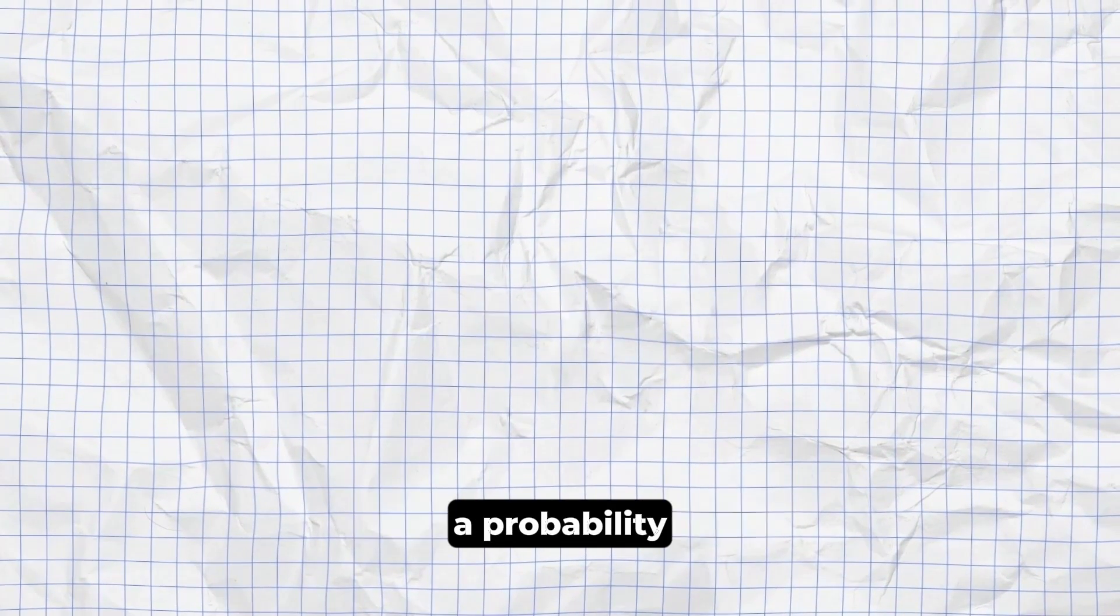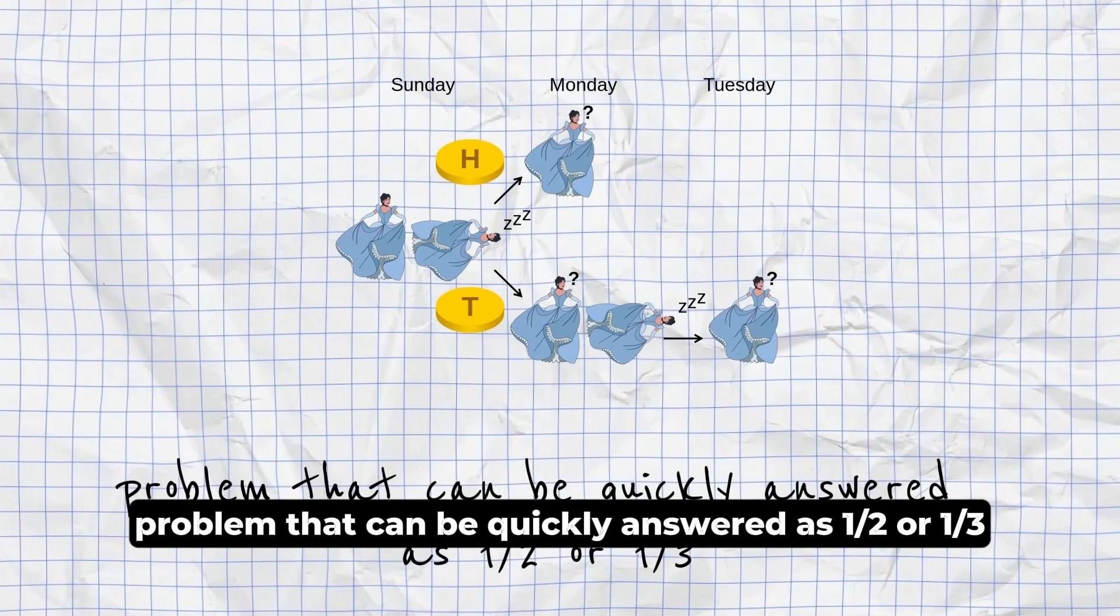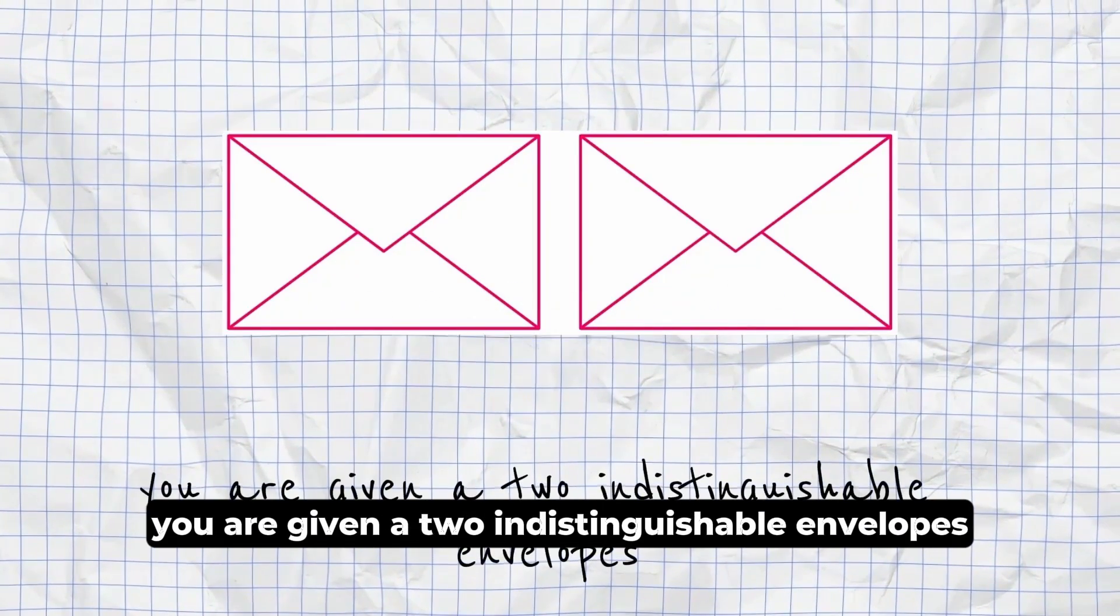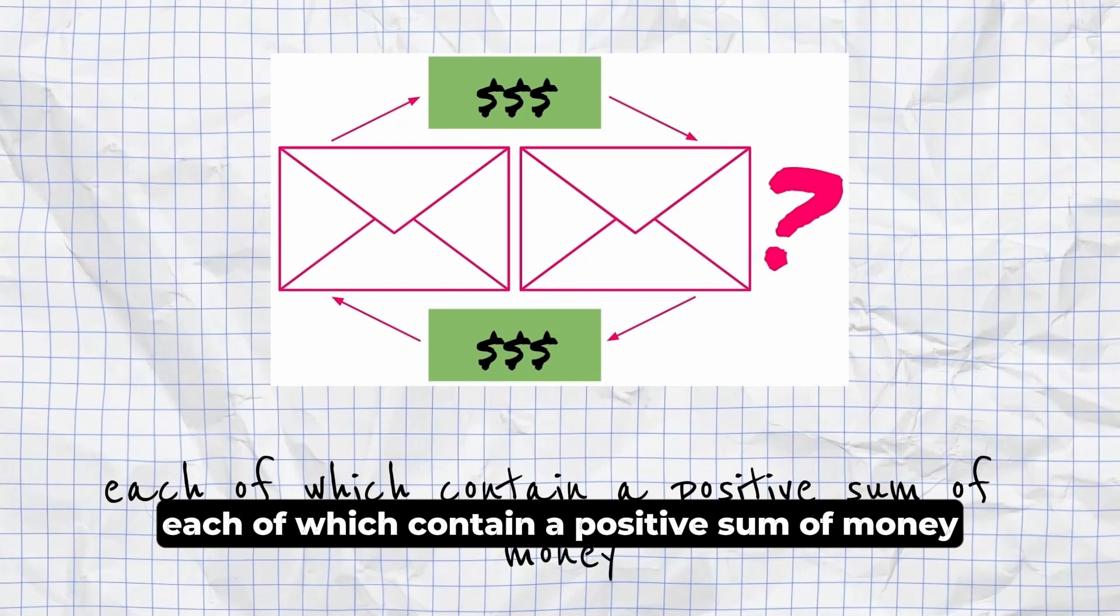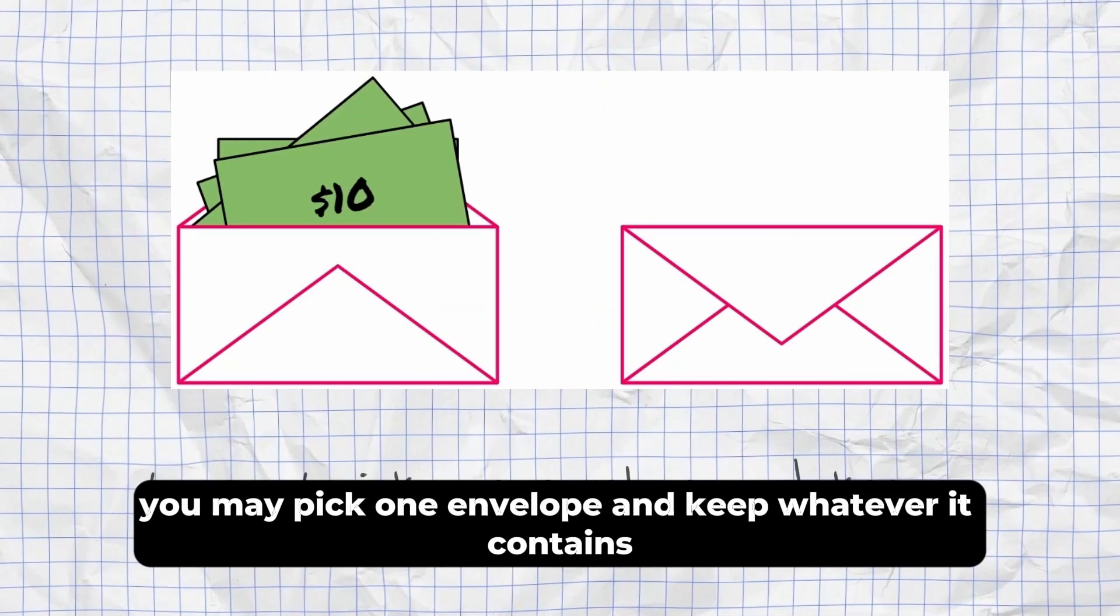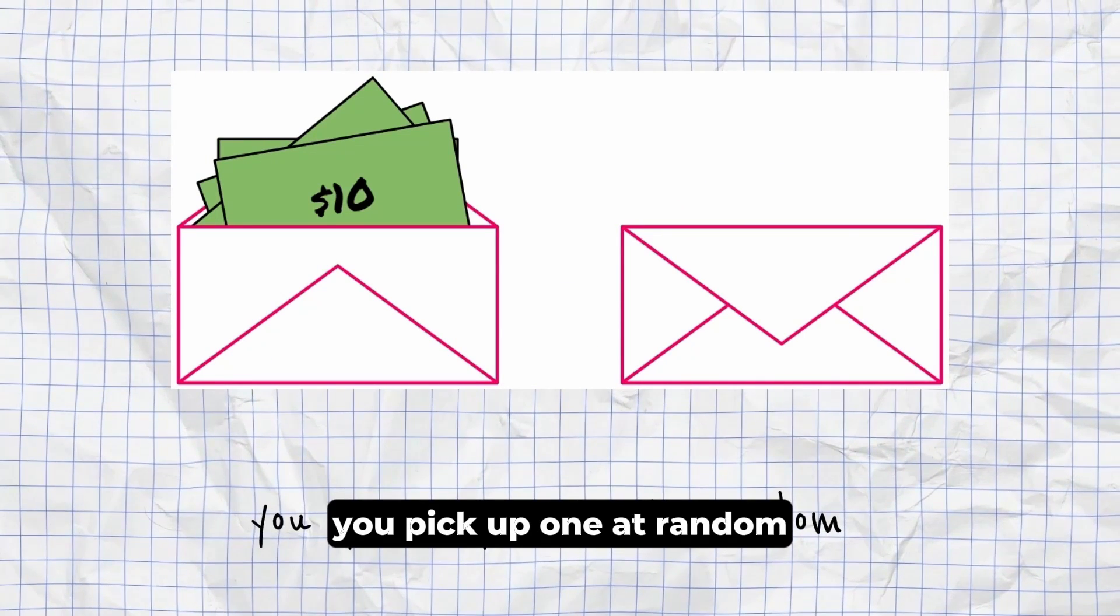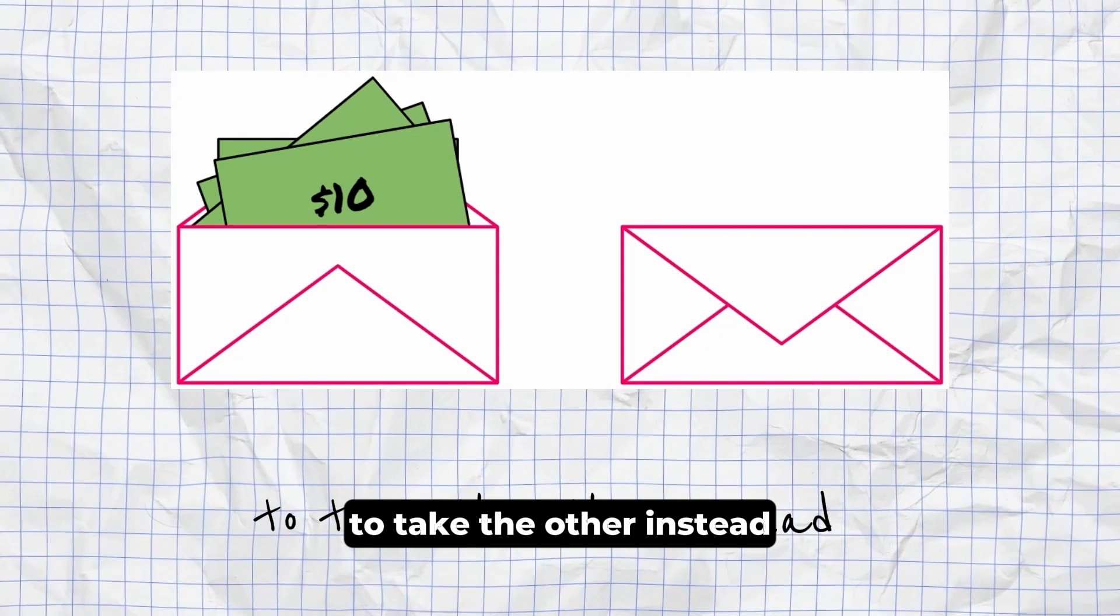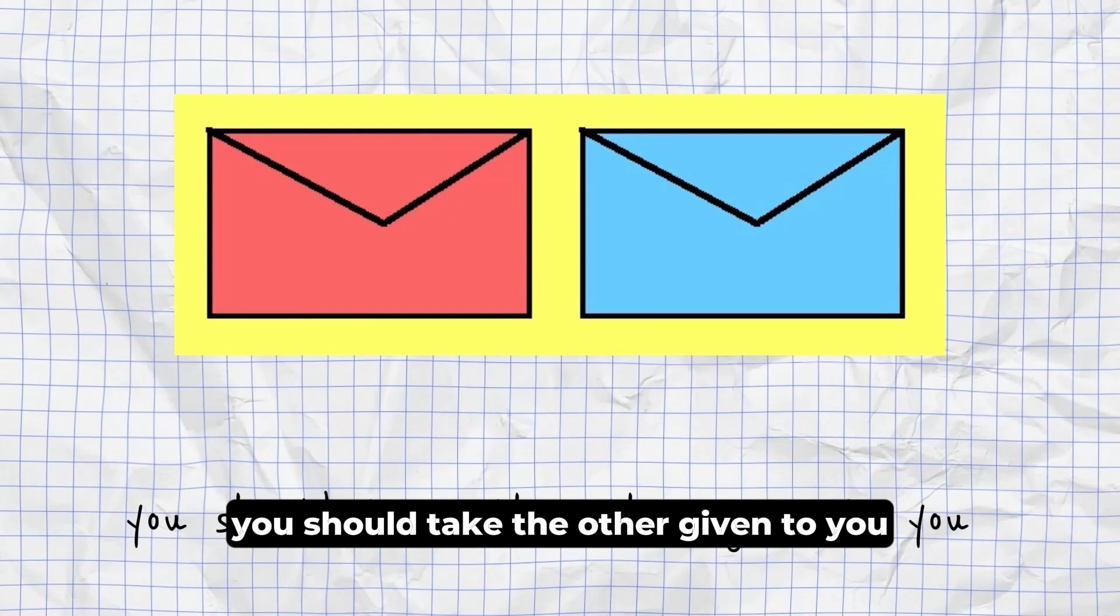Sleeping Beauty Paradox. A probability problem that can be correctly answered as one half or one third, depending on how the question is approached. Two Envelope Paradox. You are given two indistinguishable envelopes, each of which contains a positive sum of money. One envelope contains twice as much as the other. You may pick one envelope and keep whatever it contains. You pick up one at random, but before you open it, you are given the chance to take the other instead. It still seems 50-50, but in turn, you should take the other given to you.